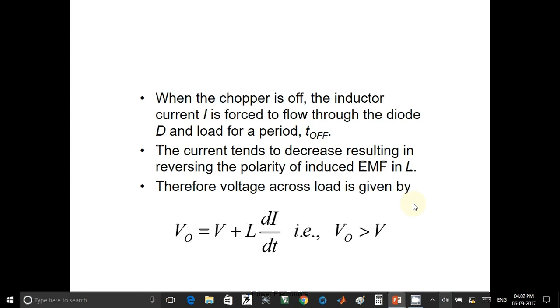When the chopper is OFF, the inductor current I is forced to flow through the diode D and load for a period of T off. The current tends to decrease resulting in reversing the polarities of induced EMF in L. Therefore, the voltage across load is given by V output is equal to V plus L di by dt. That is V output is more than that of supplied voltage V.